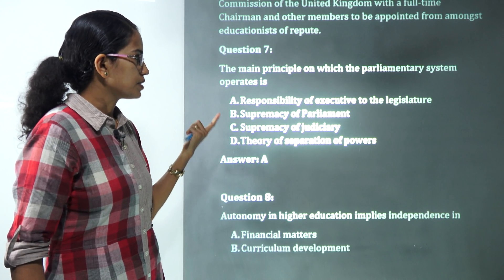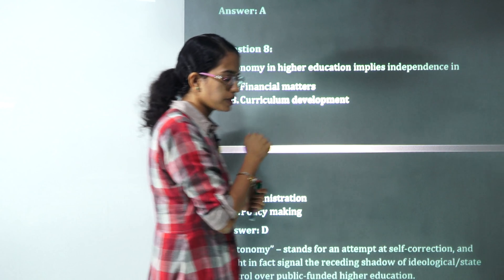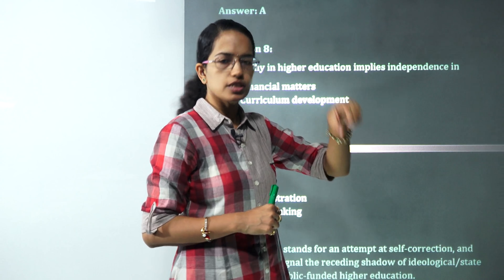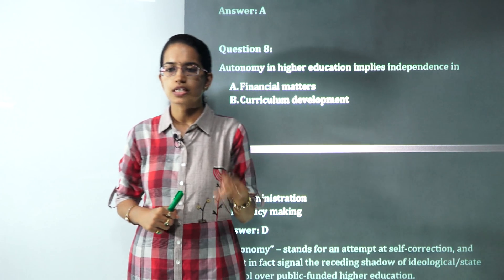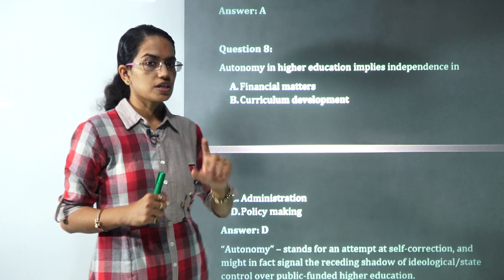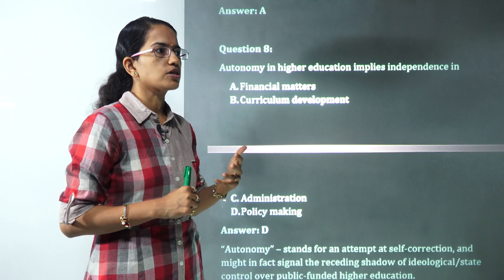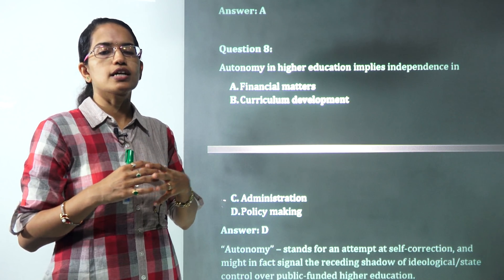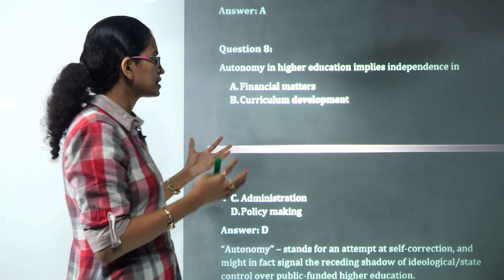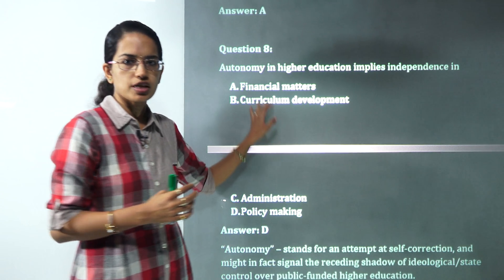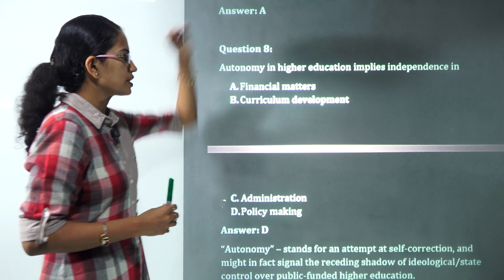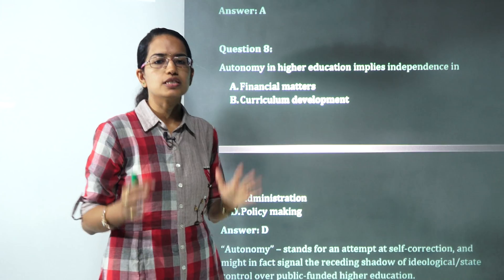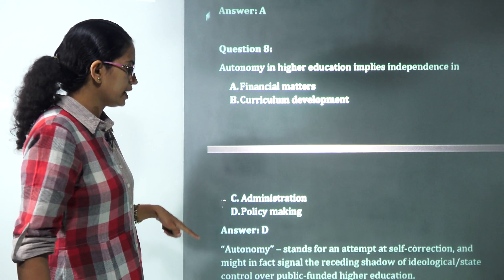This is again a question that has been previously asked in many exams. Very important question even for your upcoming net. Autonomy in education implies. This was a question based on the recent autonomy that has been granted to 62 universities. The choices are pretty confusing here. Autonomy basically talks about in terms of curriculum formation, the course that should be decided, the computing labs that should be there and the overall framework of the university. It basically is more related to policy making. Policy making from the given choices would be the most apt choice. It's nothing to directly relate to the financial matters or only curriculum or only administration. It's basically a kind of broad framework of the policies that the universities have autonomy for. You have D as the correct answer here.